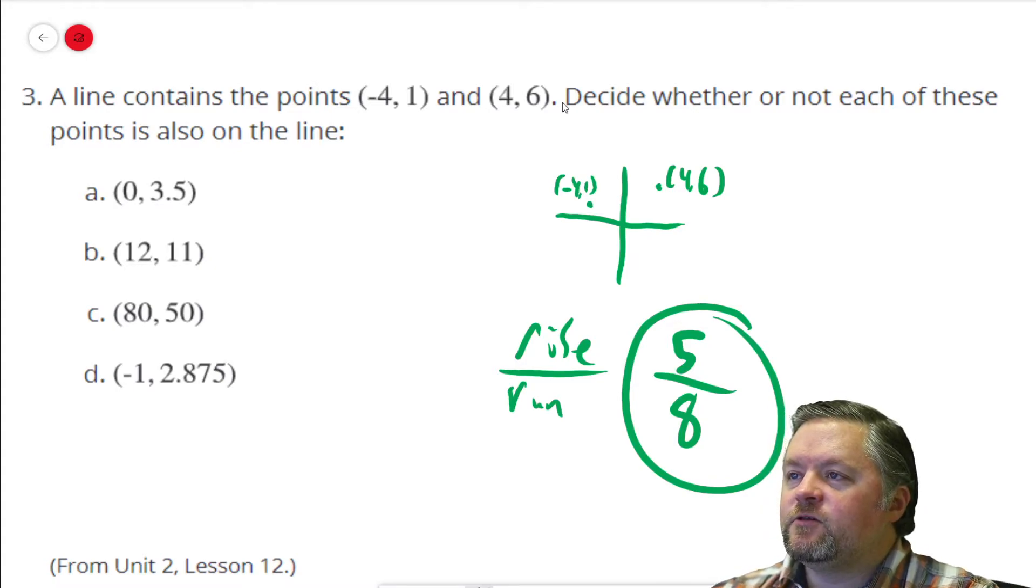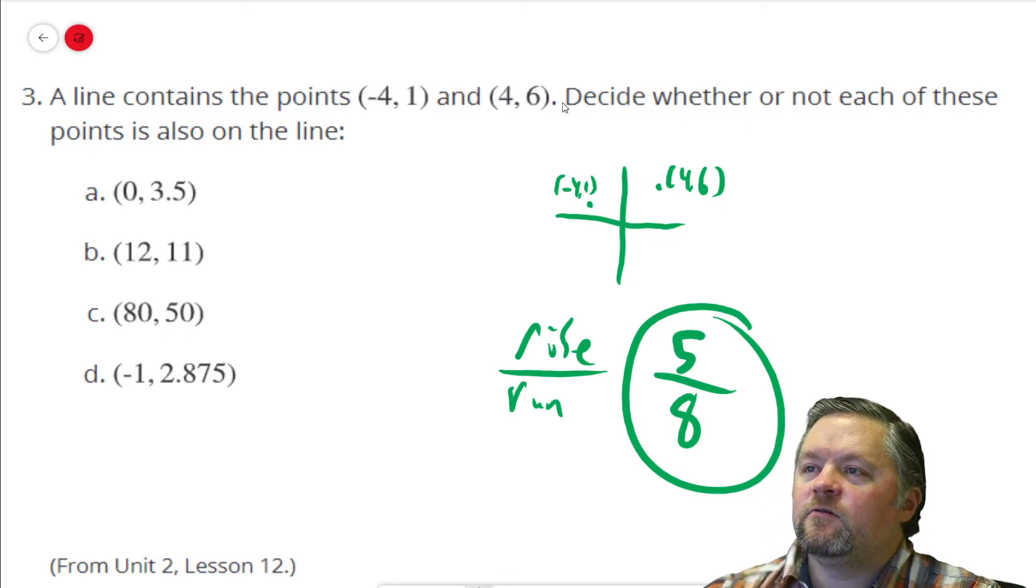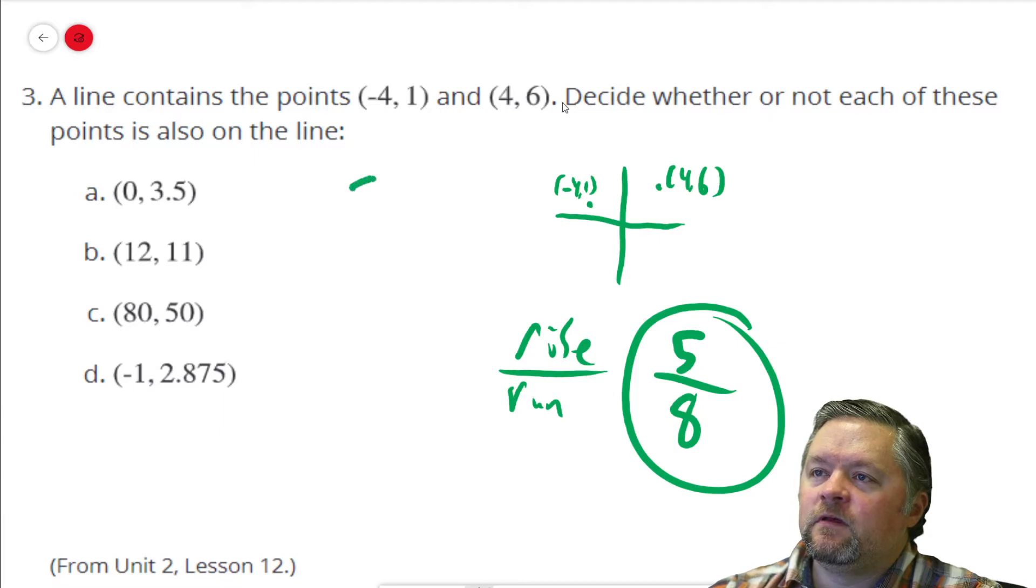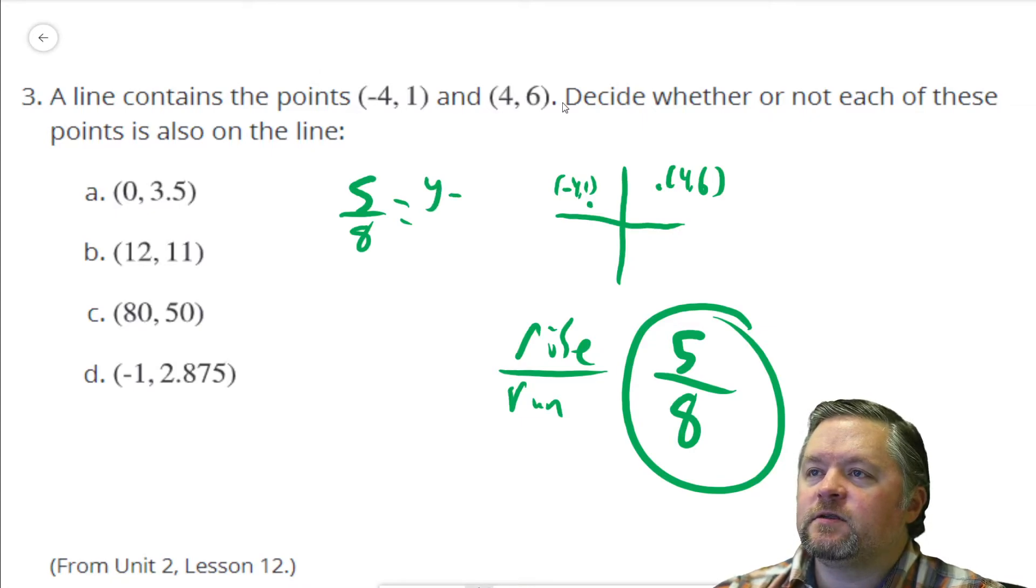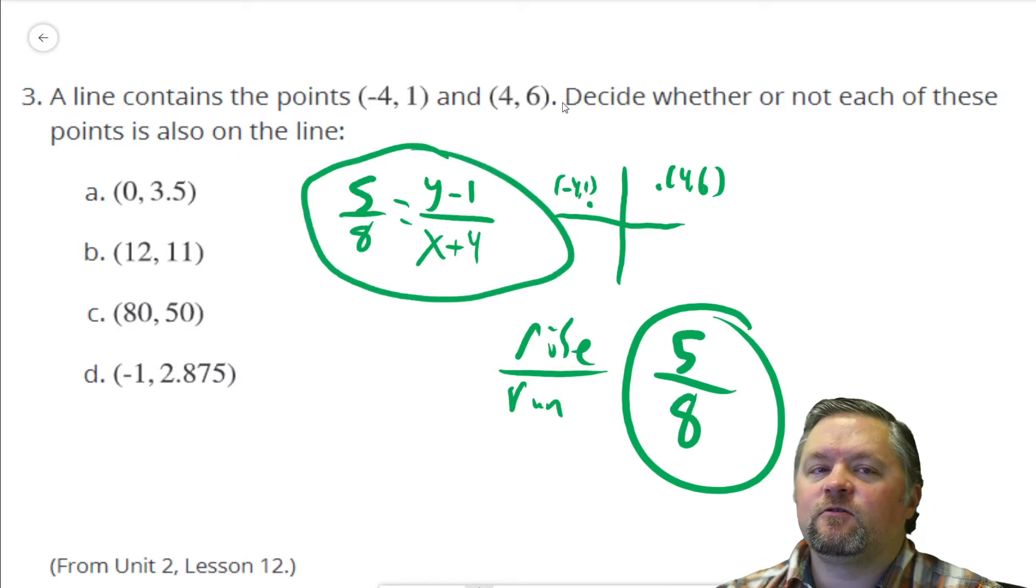Equation of the line we've been using. We know 5/8 has to equal (y minus a y point) over (x minus the x value of that point). x subtract negative 4 is x plus 4. So there's our equation of the line. Now we just have to plug in these values.